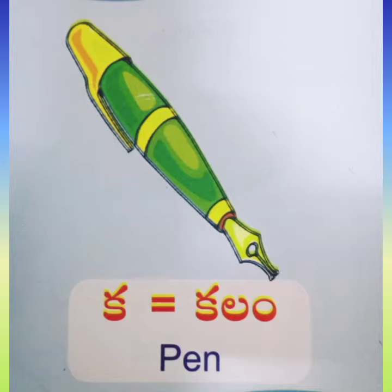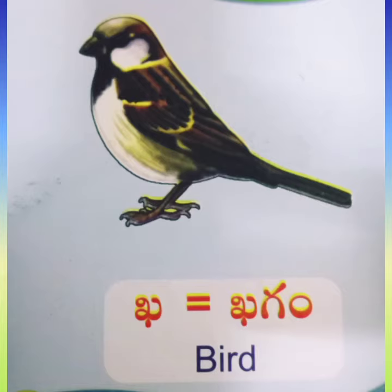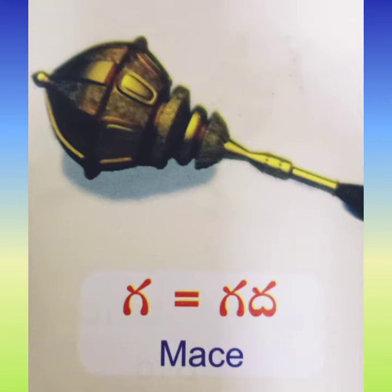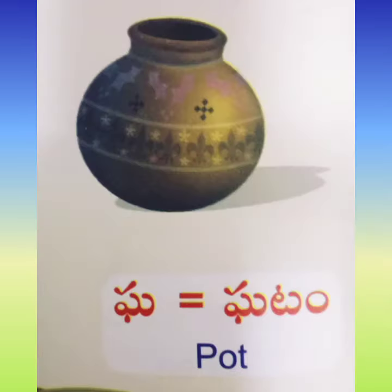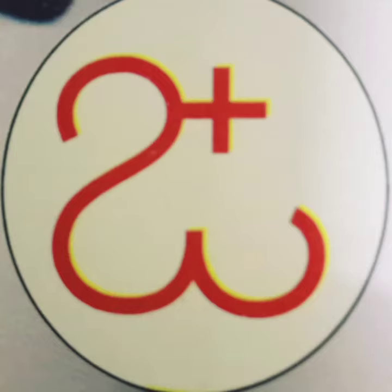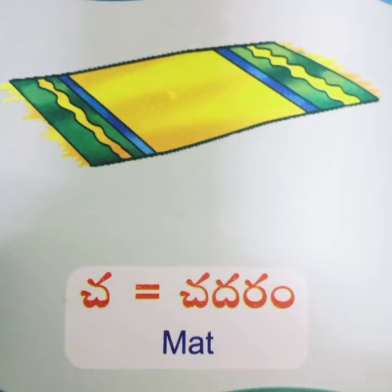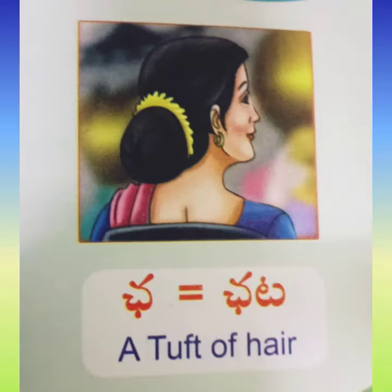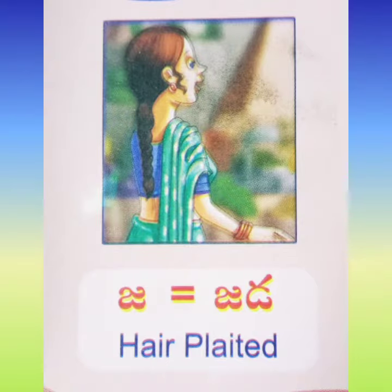Ka — kalam, pen. Kha — khagam, bird. Ga — gatam, pot. Gha — ghatam, pod. Nya — Inya letter. Cha — chadaram, mat. Chha — chata, tuft of hair. Ja — jada, plaited hair.